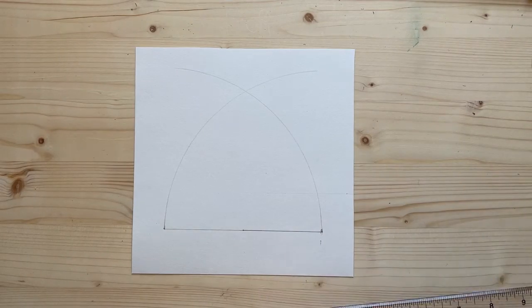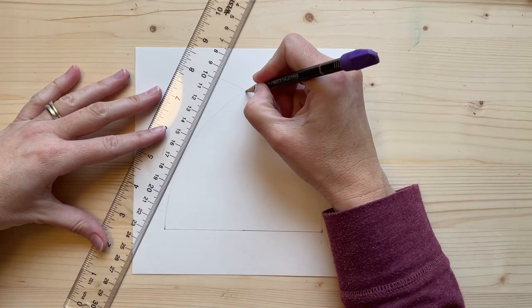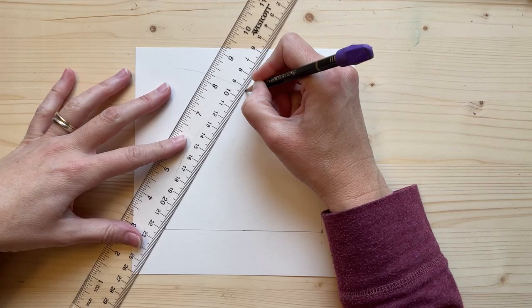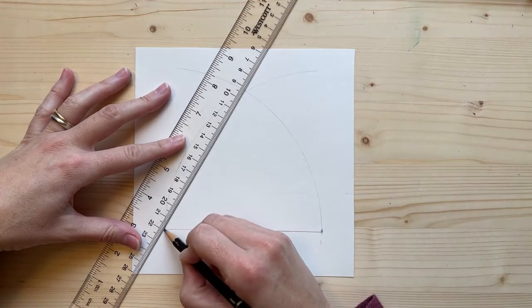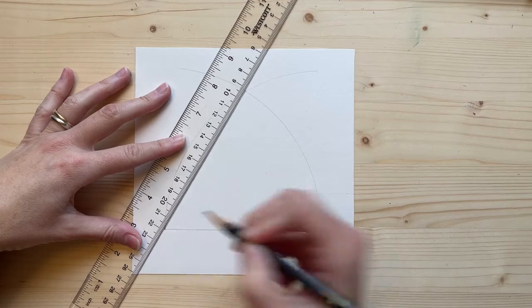Now you can set your compass aside. Take your ruler. Put your pencil in that point where those two arches cross. Connect it to the edge, to the left edge of your line, or the left point of your line, and draw your line.